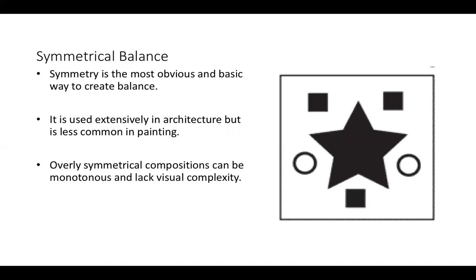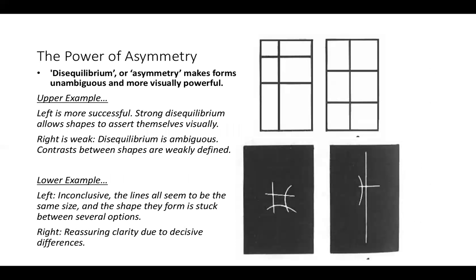That must mean there is a better way, and there is — and that way is to work with asymmetry. To give you an example of why asymmetry is valuable, I've got two examples here. Disequilibrium or asymmetry makes forms unambiguous, and by that unambiguity it makes them more visually powerful, more forceful, more obvious. Look at the upper example — the left one is more successful because the strong disequilibrium allows shapes to read clearly visually. On the right it's a weak resolution; the disequilibrium is ambiguous and the contrast between shapes is weakly defined.